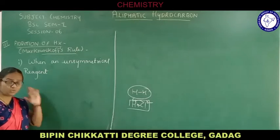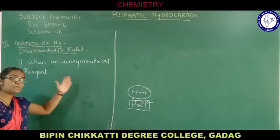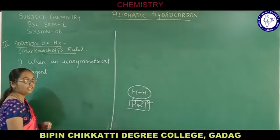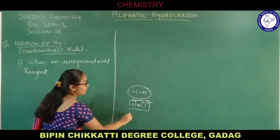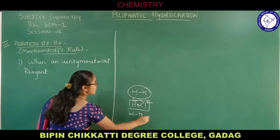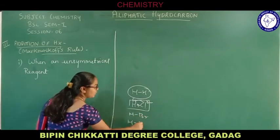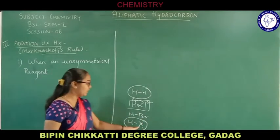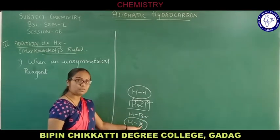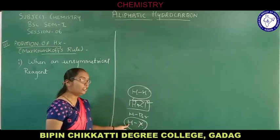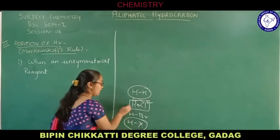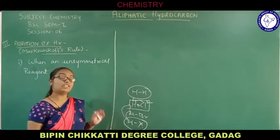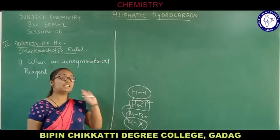Whenever an unsymmetrical reagent like HCl or HBr — which is basically HX, a hydrogen halide — wherein one halogen group and one hydrogen group are present, that is an example of a hydrogen halide. So hydrogen halide is considered to be an unsymmetrical reagent.